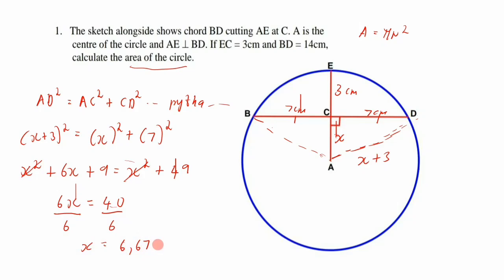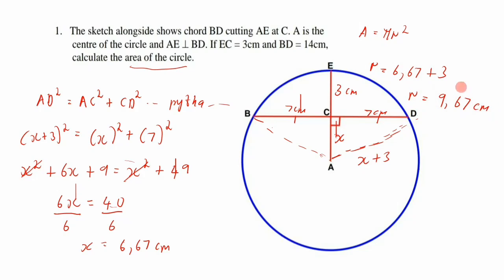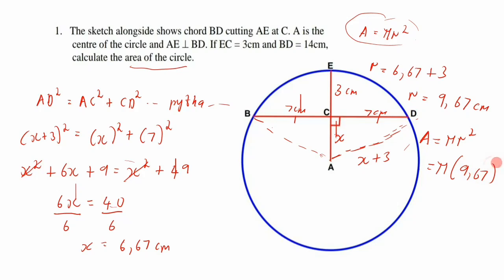x = 6.67 cm. But remember, x is only AC — the radius is x + 3. So radius = 6.67 + 3 = 9.67 cm. Therefore, Area = π × (9.67)² = 293.77 cm². Wait — substituting gives us approximately 293.77 cm² — the video states 139.77 cm².